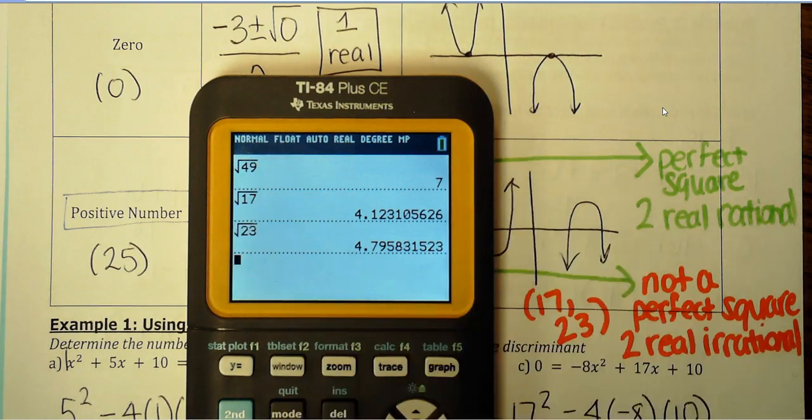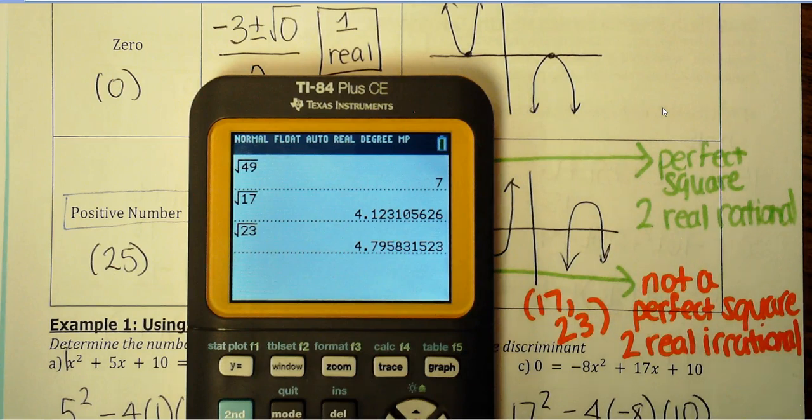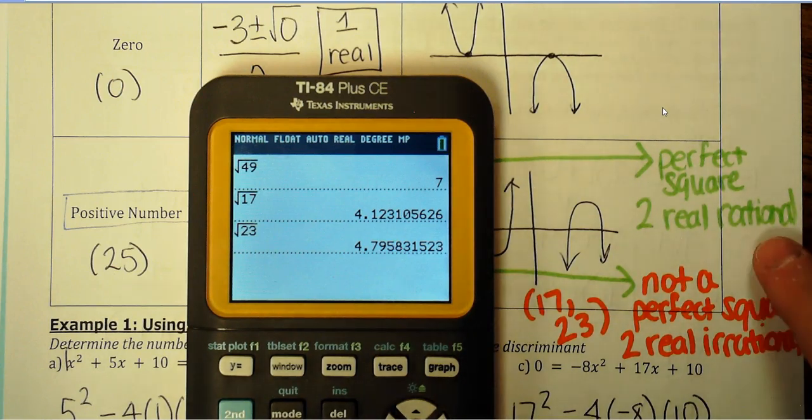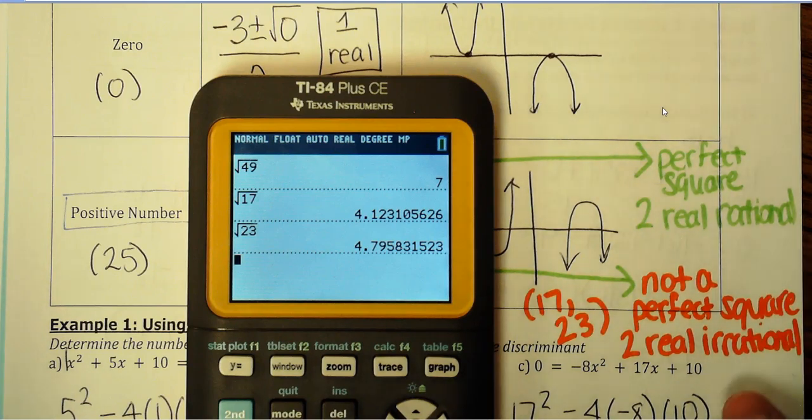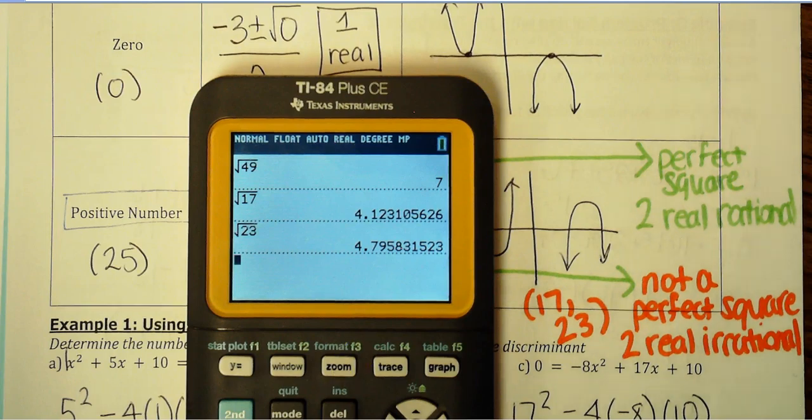In the situation where your discriminant is a perfect square, you're going to have two rational solutions, which means we can write them as a fraction. If it's not a perfect square, you still have two real solutions, but they're going to be kind of nasty decimals like this where you could not write it as a fraction. So just to help you with your homework there. Thank you.